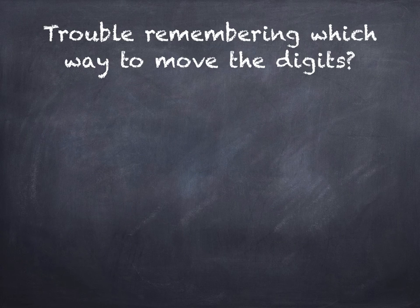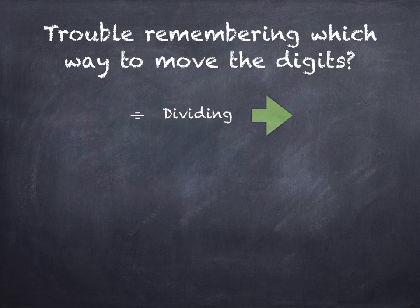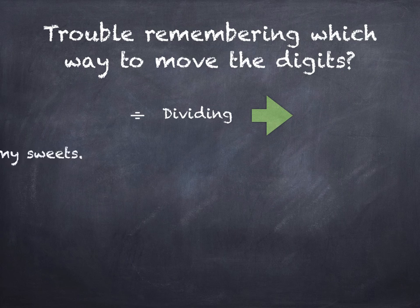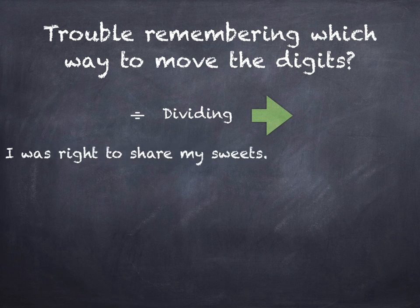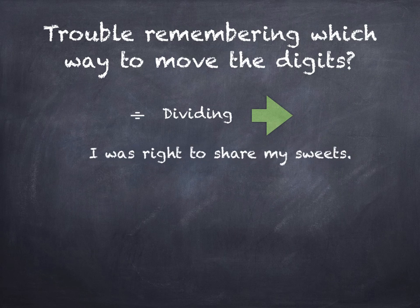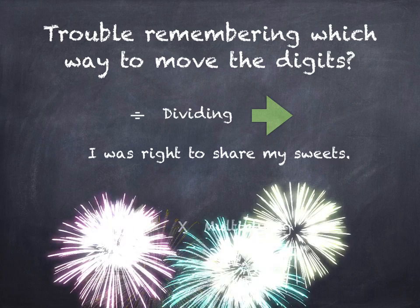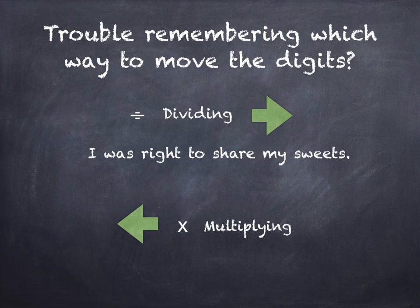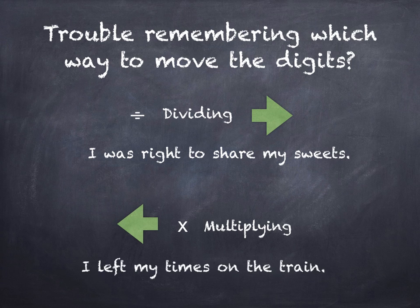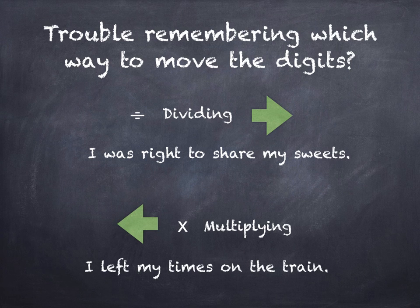Now if you have trouble remembering which way to move the digits, just try and remember these. When we divide we go to the right — 'I was right to share my sweets.' And when we multiply we move digits to the left — 'I left my times on the train.'